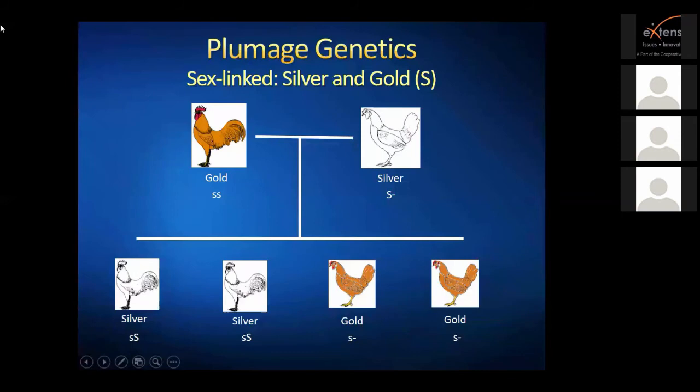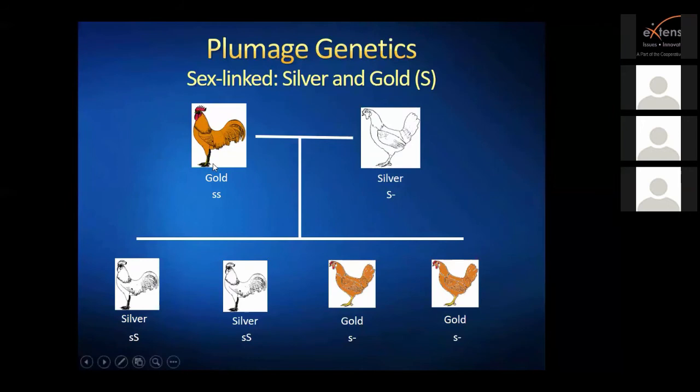Another sex-linked gene is the gold gene: silver (uppercase S) is dominant. You can cross a gold male with a silver female of any kind — barred rock or other silver female — and the males will show some silver while the females will be gold. This provides another way of sexing birds at an early age.